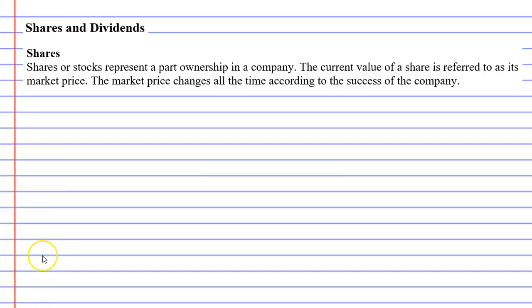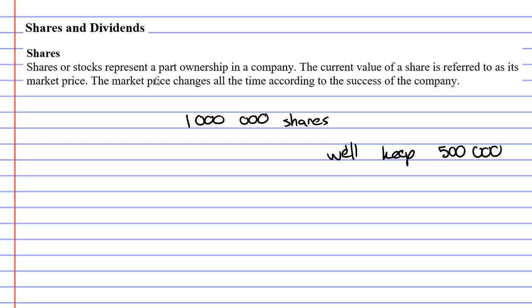So a company might come along and they might not have much money. So what they do is they say, all right, we'll split our company into 1 million shares, and we still want to keep some ownership of the company. So we'll keep half the shares — 500,000 shares — so that we still own at least half of the company, and we'll sell the rest.